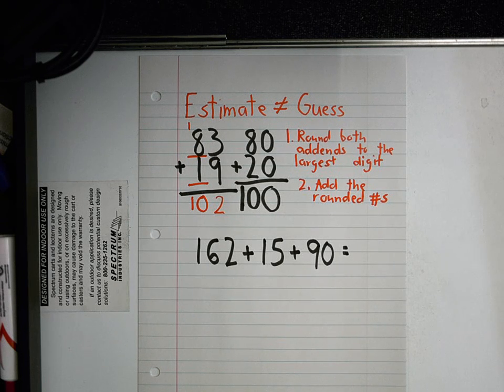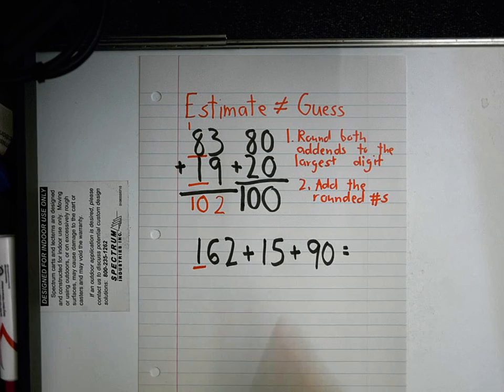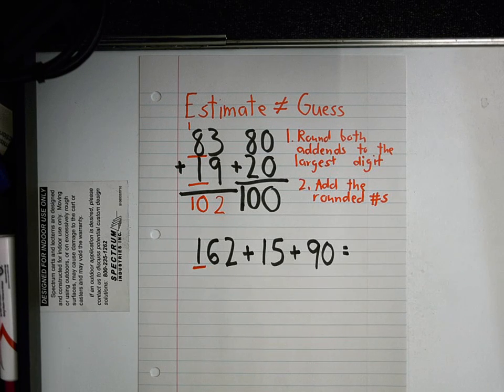Alexandra, add the both, or round them. Round them to the largest number. So which number am I going to underline in 162, Clayton? The one. Yeah, because that's the largest digit. What one am I going to underline in 15, Kylie? The one again. Yeah, because it only goes up to tens.